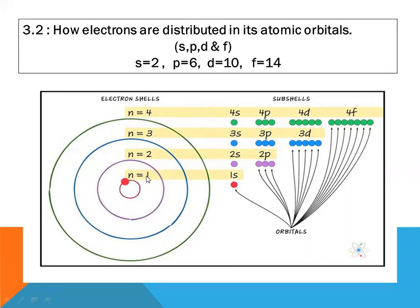First shell nearer to the nucleus is n=1, that is K shell, having one sub-shell: 1s. Second shell has two sub-shells: 2s and 2p. Third shell has three sub-shells: 3s, 3p and 3d. Fourth shell has four sub-shells: 4s, 4p, 4d, 4f. Rest of the shells have only four sub-shells: s, p, d and f.